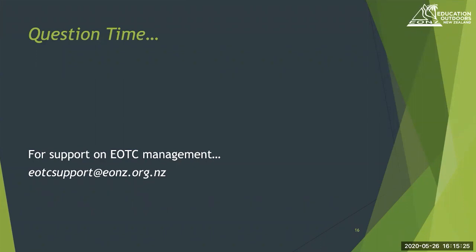If you're using a commercial transport provider, they will have their own requirements as well, which will probably include leaving those seats empty behind their driver. Regarding the cap of 10 for bookable DOC accommodation: it hasn't changed on the website yet, but the conversation with the person who wrote the DOC guidelines was that it would shift as soon as that 10 shifted. In level two, it will likely only shift to half the capacity of the hut, because they're dealing with the public and that two-metre rule.